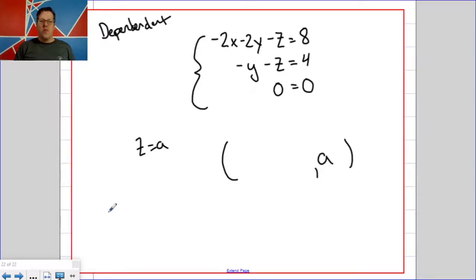So if z equals a, then we back substitute into the previous equation. Opposite of y minus a equals 4. Well, let's do this first. a plus 4. y equals negative a minus 4.